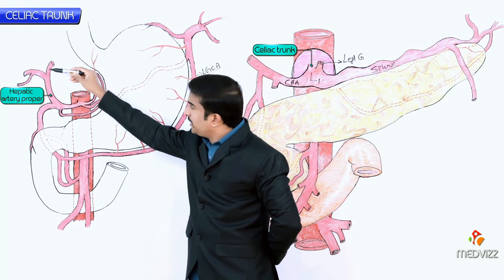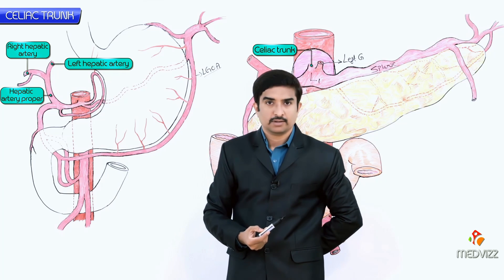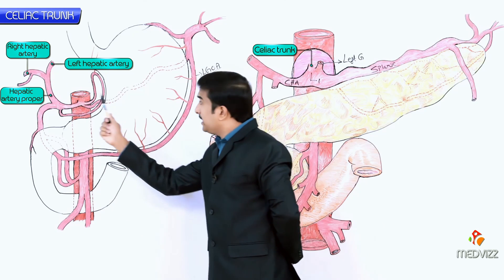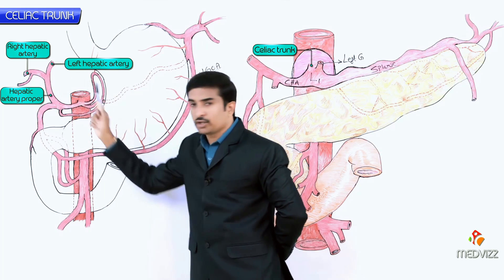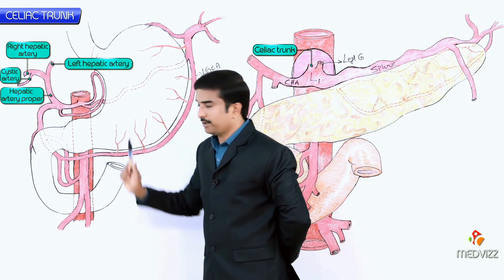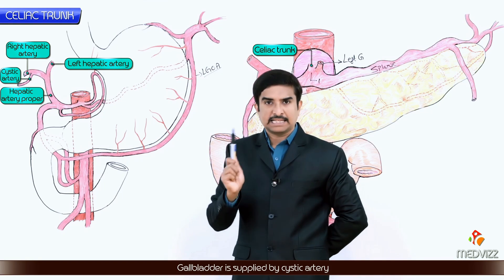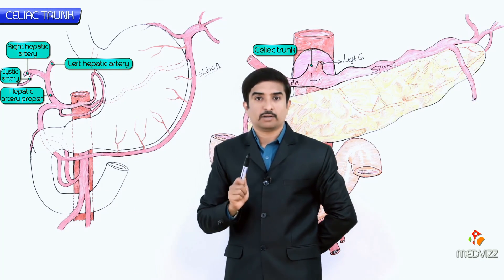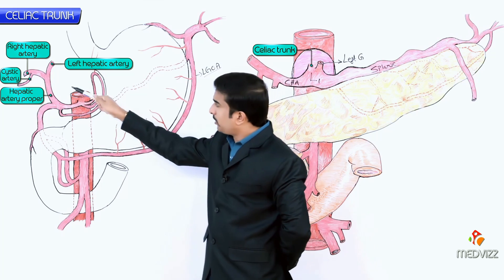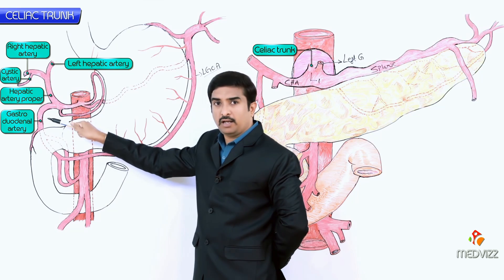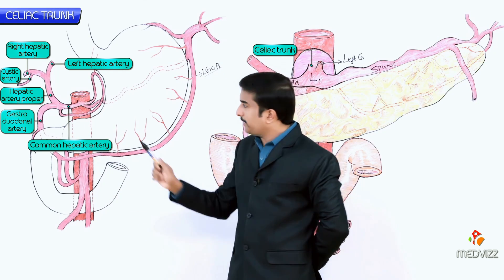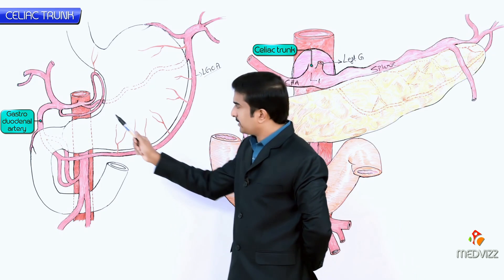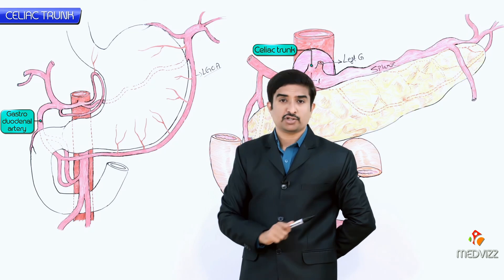The hepatic artery proper ascends towards the liver and divides into left and right hepatic arteries near the porta hepatis. As the right hepatic artery nears the liver, it gives off a small branch called the cystic artery to supply the gallbladder. The hepatic artery proper and gastroduodenal artery are the terminal branches of the common hepatic artery.